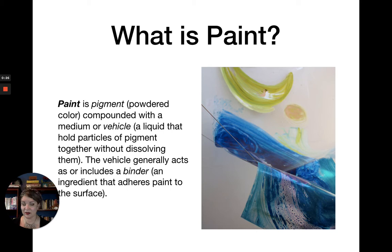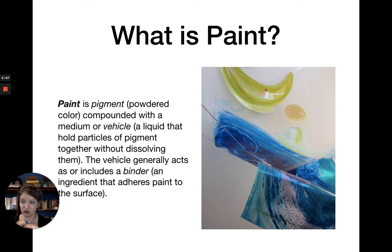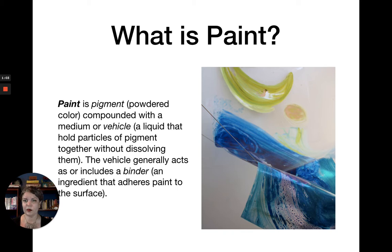First of all, let's start really basic. What is paint? Paint is pigment — you're going to hear me say the word pigment a lot today. Pigment is the powdered color which historically has been made from naturally occurring minerals. Like if you look at some historic blue paints used in ancient Egypt, for example, they were made with pulverized lapis lazuli, that's a gemstone. So paint is literally a pigment, a powdered color that's been compounded with a medium or a vehicle — a liquid that's going to hold those particles of pigment together without dissolving them. It's kind of the carrier for the color, for the pigment.